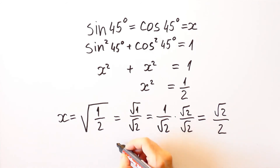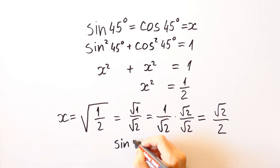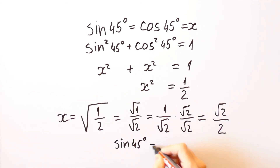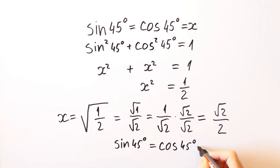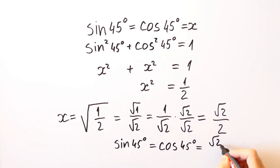Therefore, the sine of 45 degrees and the cosine of 45 degrees are both equal to the square root of 2 over 2.